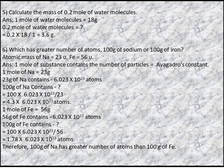1 mole of iron = 56g (atomic mass = 56). 56g of iron contains 6.022 × 10²³ atoms. 100g of iron contains 100 × 6.022 × 10²³ ÷ 56 = 1.78 × 6.022 × 10²³ atoms. Therefore, 100g of sodium has a greater number of atoms than 100g of iron.